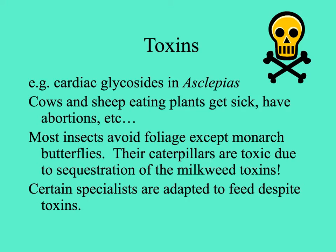Then there are toxins. Probably the most familiar are the cardiac glycosides in milkweeds, Asclepias. Farmers dislike these plants because cows and sheep that eat them get sick, abort fetuses, and can't give milk. These toxins repel most insects as well. However, certain butterflies seek the plants — notably the monarch butterfly. The caterpillars eat the leaves, which have white sap full of cardenolides, and sequester those toxins, which are even passed through to the adult stage of the butterfly.